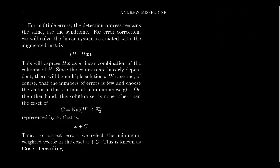And before we go further, though, I want to talk a little bit about what if there's multiple errors. Because single error is pretty nice. You just look for the column that matches up there. So for multiple errors, the detection process remains the same. Use the syndrome. Right? If the syndrome is non-zero, there is an error. Then we have to decide, can we correct it? So for error correction, we have to solve the linear system associated to this augmented matrix.